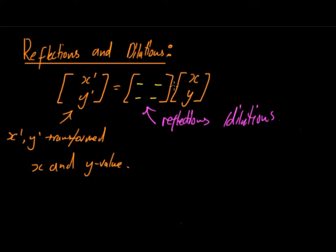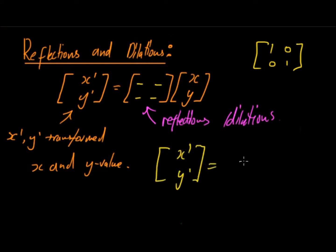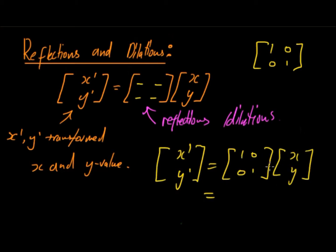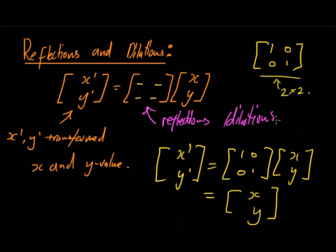If we have the 2-by-2 matrix [1, 0; 0, 1], this is the identity matrix. If we calculate x-dash, y-dash = [1,0;0,1] * [x;y], we get x-dash = 1*x + 0*y = x, and y-dash = 0*x + 1*y = y. So the identity matrix doesn't change anything at all. From this identity matrix, we then change some values to form reflections and dilations.